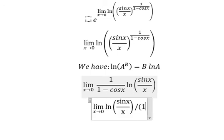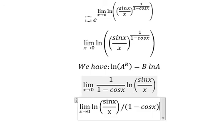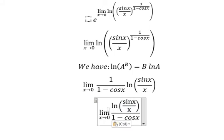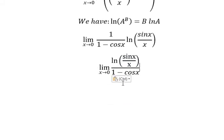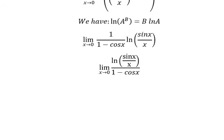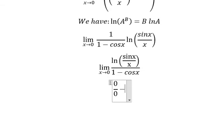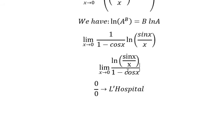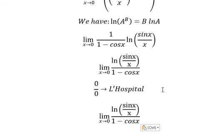I will write sin(x) over x, and I will put it as ln of sin(x) over x, all over 1 minus cos(x). So when x approaches 0: sin(x) over x gives about 1, cos(x) gives about 1, ln of 1 gives about 0, and 1 minus 1 gives 0.